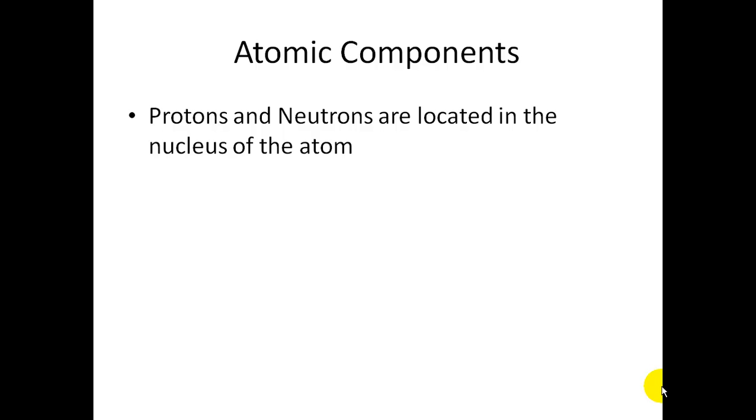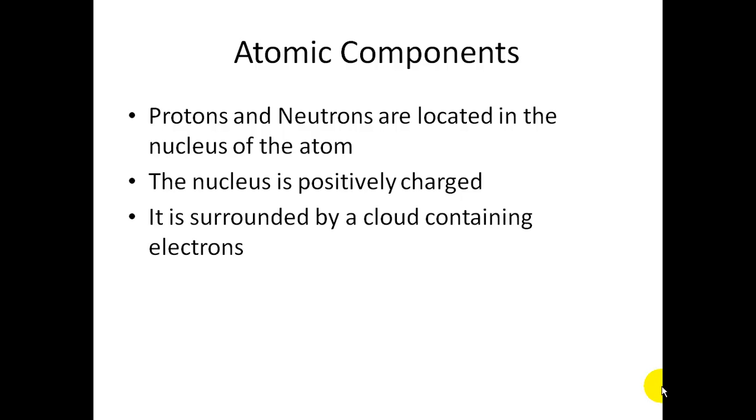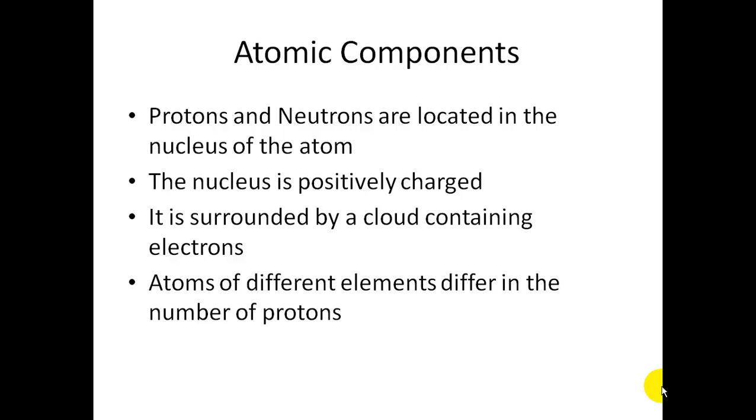Protons and neutrons are located inside the atom in the nucleus. The nucleus is positively charged. The nucleus is surrounded by a cloud that contains the electrons. We call this the electron cloud. Atoms of different elements differ in the number of protons. So that's what makes each element different, are the number of protons.